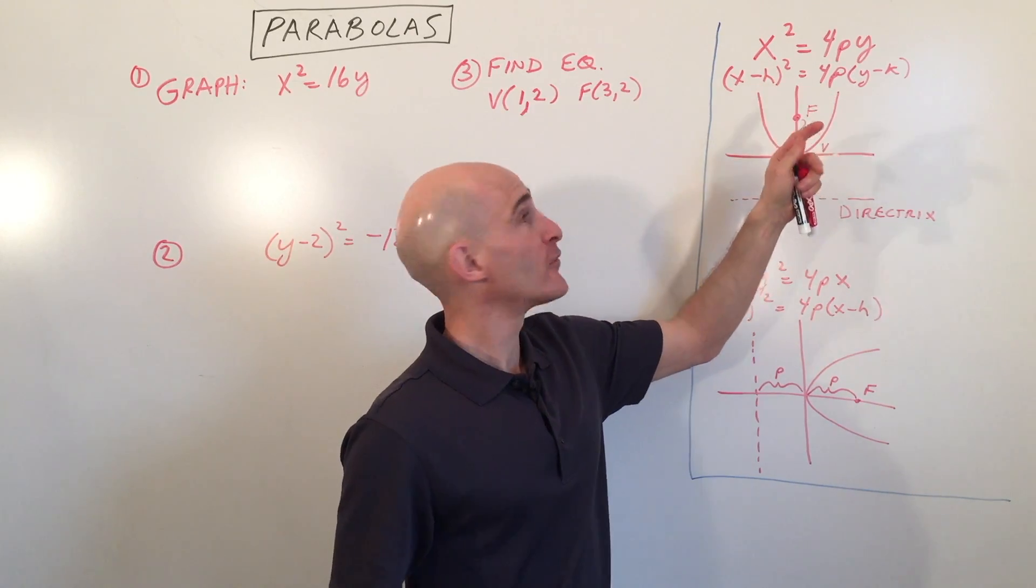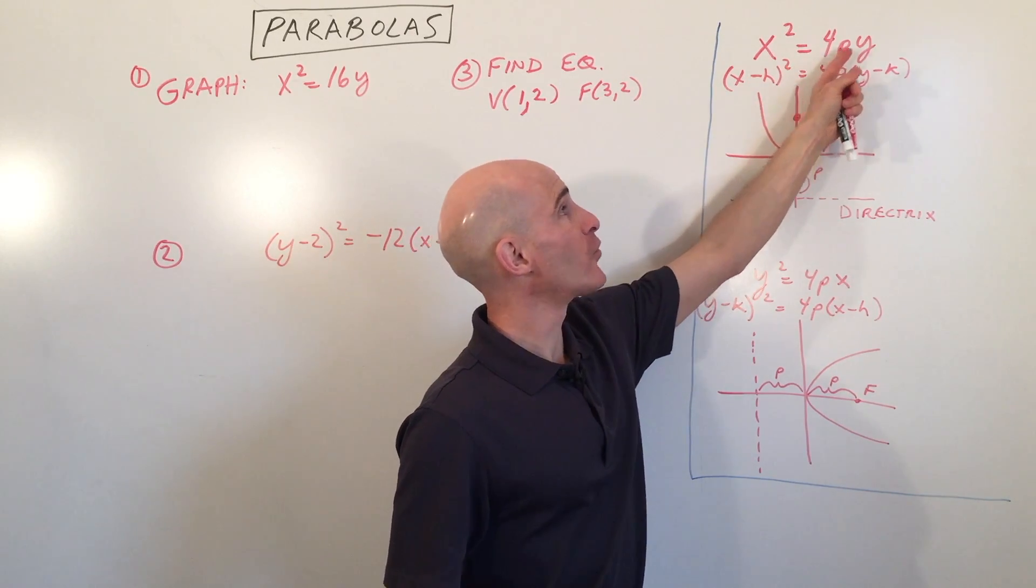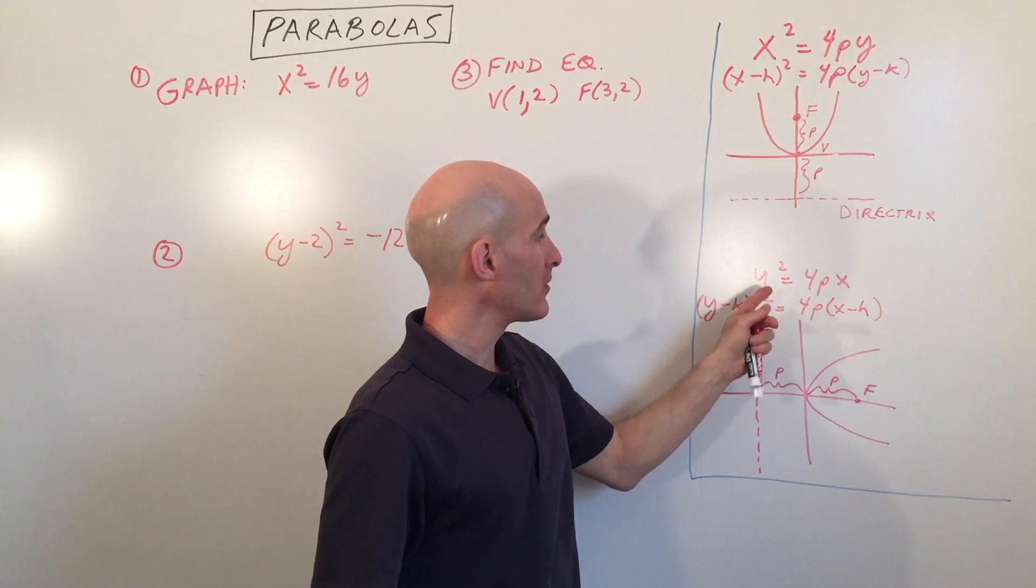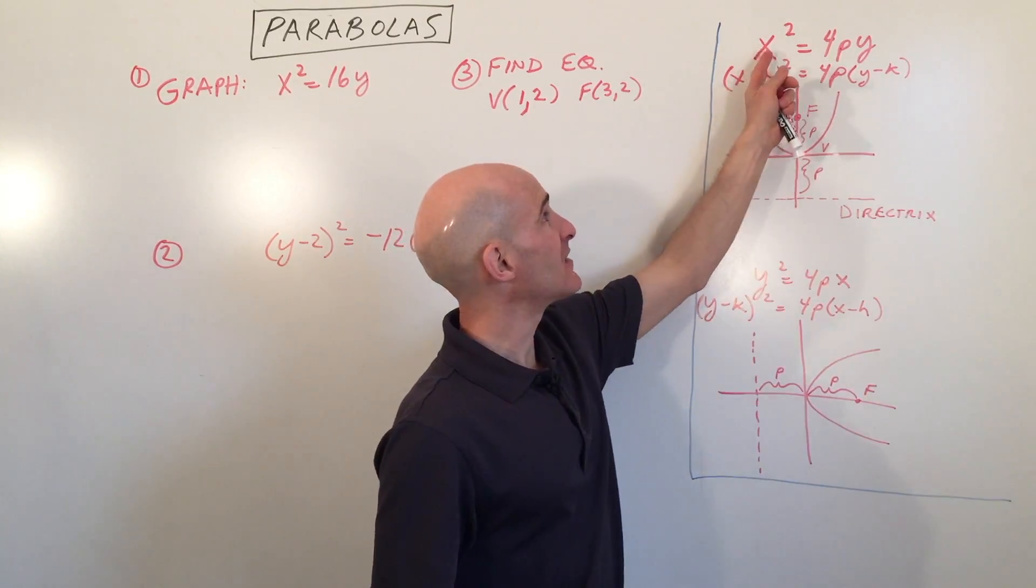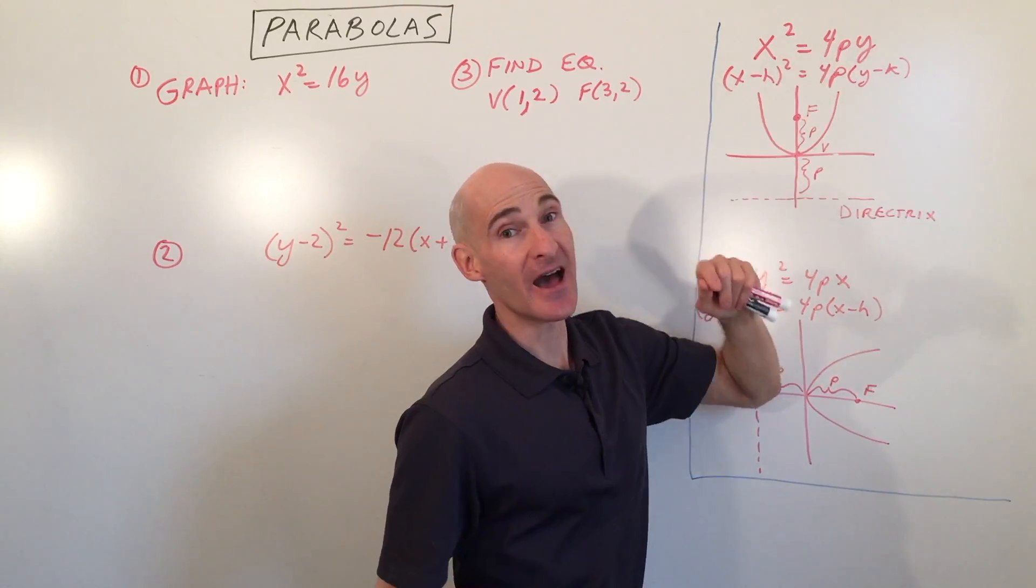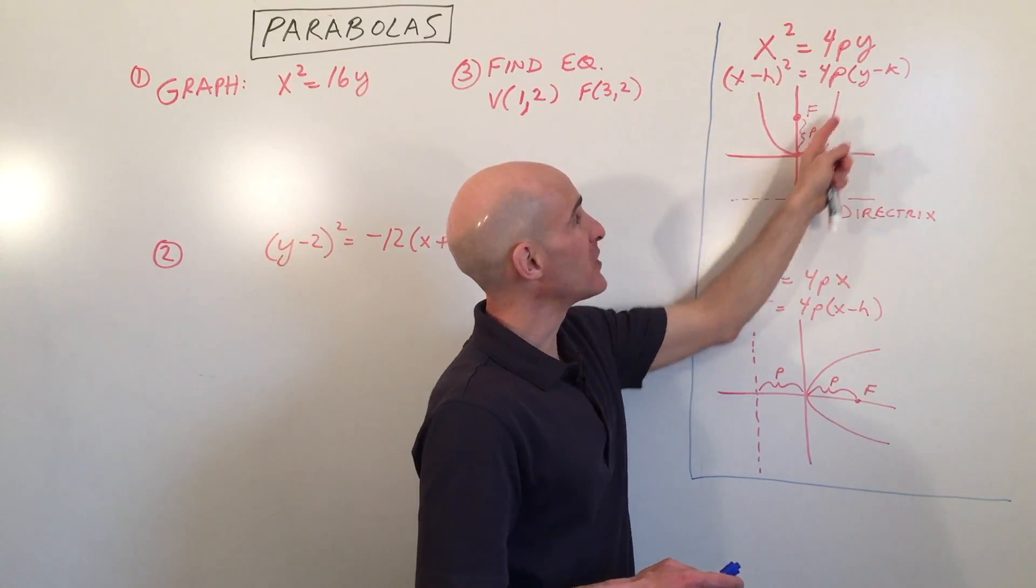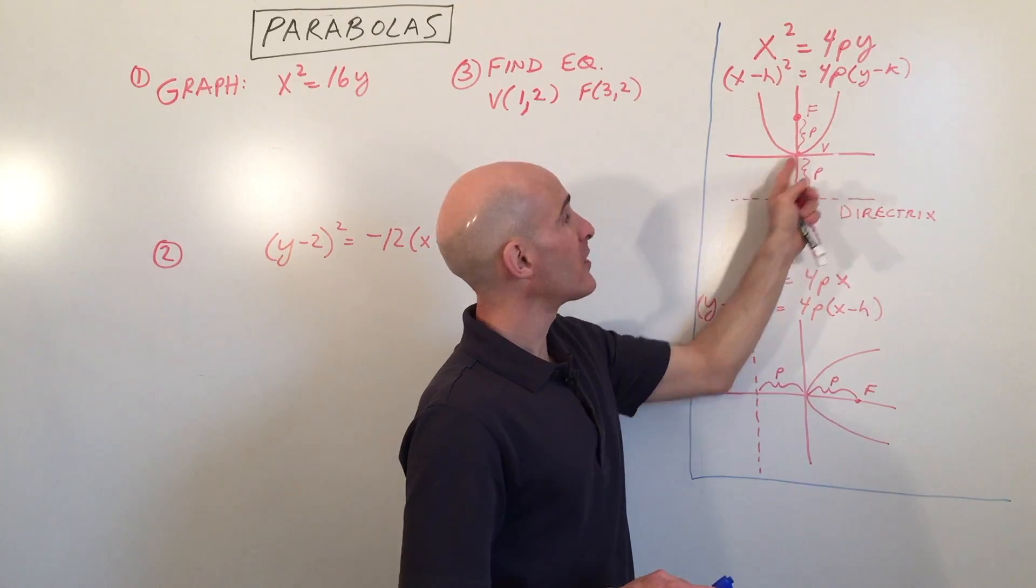These parabolas are going to be either in the form x² = 4py or y² = 4px. If you can see that the x term is squared and the y term is not, that tells you that the parabola is opening up or down.